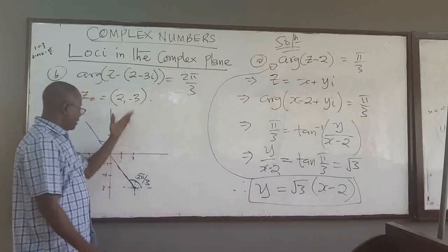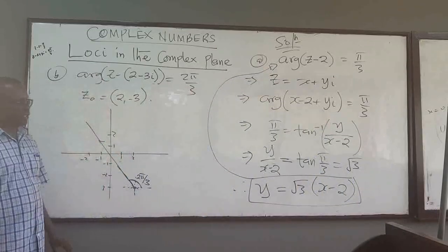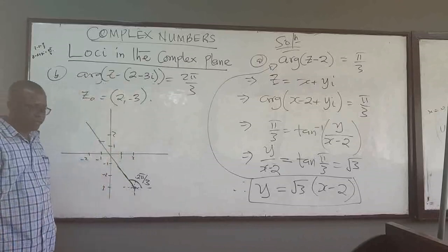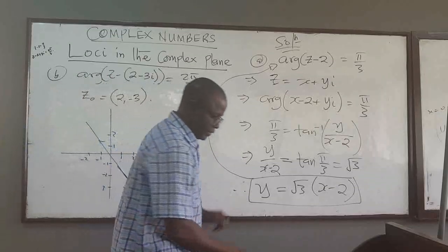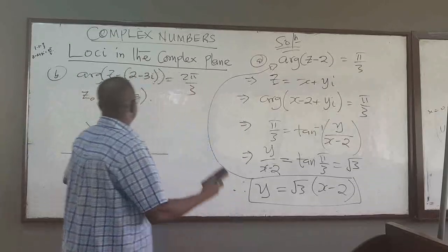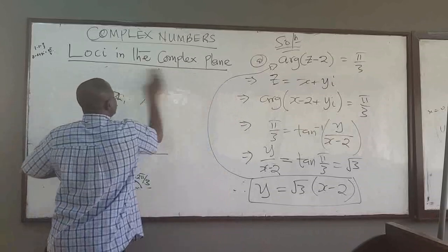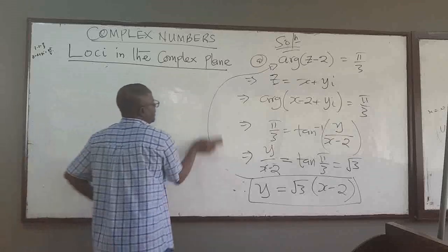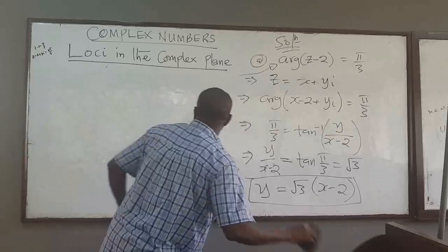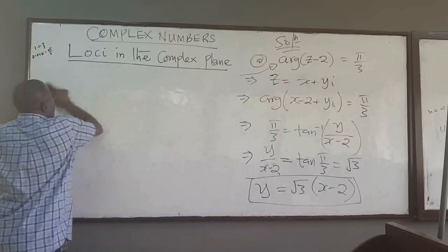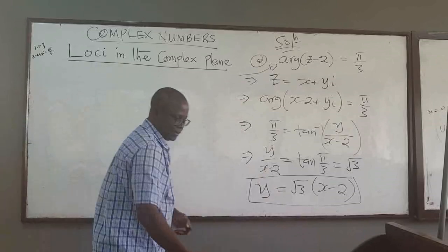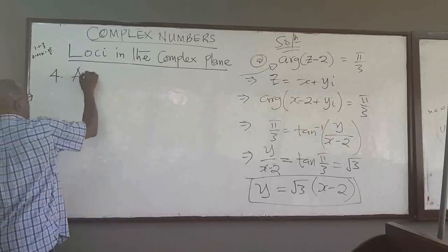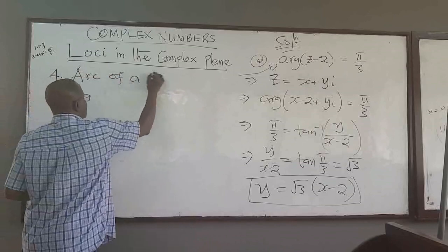Similarly, you can find the Cartesian form of part (b) by letting z equal x plus yi. Now, the next locus we want to look at is the fourth one — the arc of a circle.